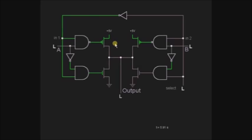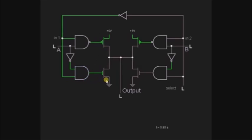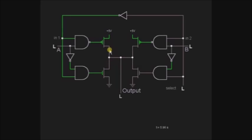That high output is fed to the PMOS transistor. The selection line is also connected to the AND gate, and the NOT of the input is given to the AND gate. The output of the AND gate is high since both inputs are high. The NAND gate output is connected to the PMOS, and the AND gate output is connected to the NMOS. As a high logic is given to the PMOS, it will be in open circuit, so there will be no flow of current from the PMOS transistor, resulting in low voltage.